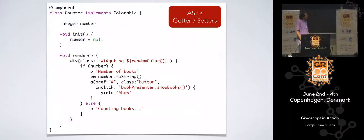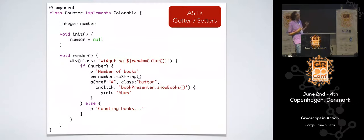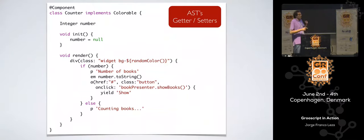For example, there is an annotation called @Component that I created for the books demo. It is the counter of the books. When I annotate this class with @Component, the AST transformation adds a method — a setter for the number property. When that setter is called, apart from setting that number, it redraws the component using HTML and does all the work for us. So if we have an instance of Counter, just do 'counter.number = 7' and the component redraws itself on the client. With the power of AST transformations we can change our code — and it's all in Groovy.